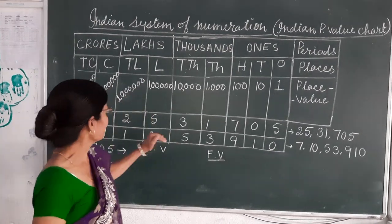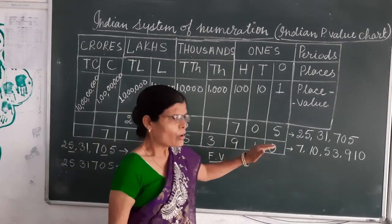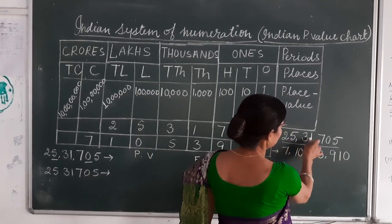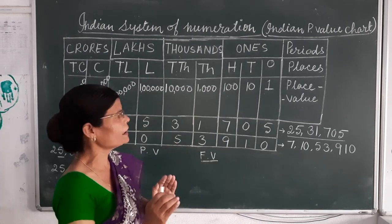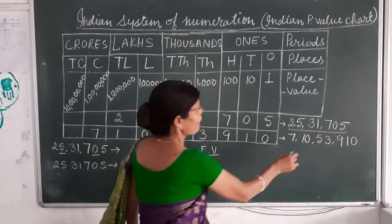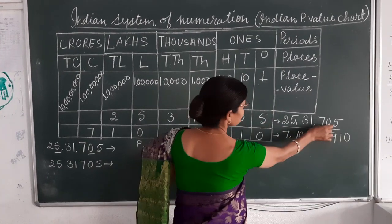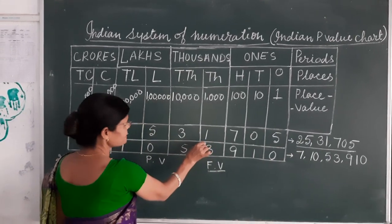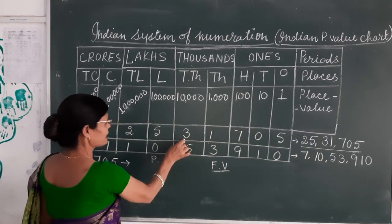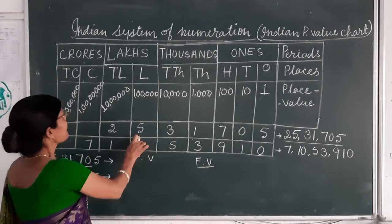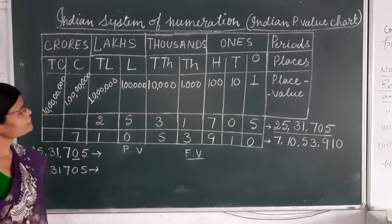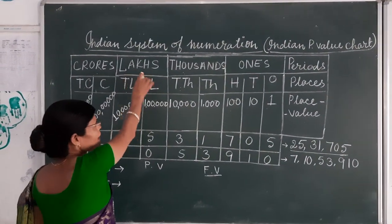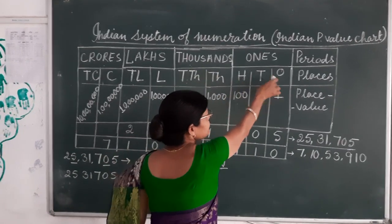When we put a number into this chart, what will we see? There is a number: 2, 5, 3, 1, 7, 0, 5. We will put each digit according to its place. 5 is in the Ones place, 0 is in the Tens place, 7 is in the Hundreds place, 1 is in the Thousands place, 3 is in the Ten Thousands place, 5 is in the Lakhs place and 2 is in the Ten Lakhs place. According to the chart, there are 2 places in Lakhs, 2 places in Thousands and 3 places in Ones.